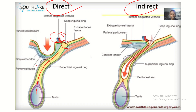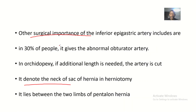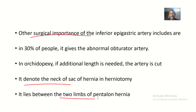It also denotes the neck of the sac of a hernia. Basically it is the starting point of a hernia, and it lies between the two limbs of a Pantaloon hernia. Just know that the inferior epigastric artery and inferior epigastric veins are related to anything hernia.